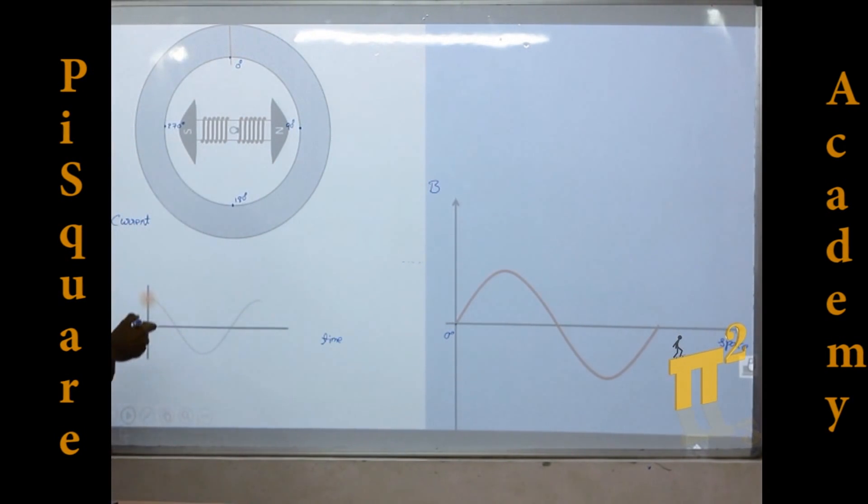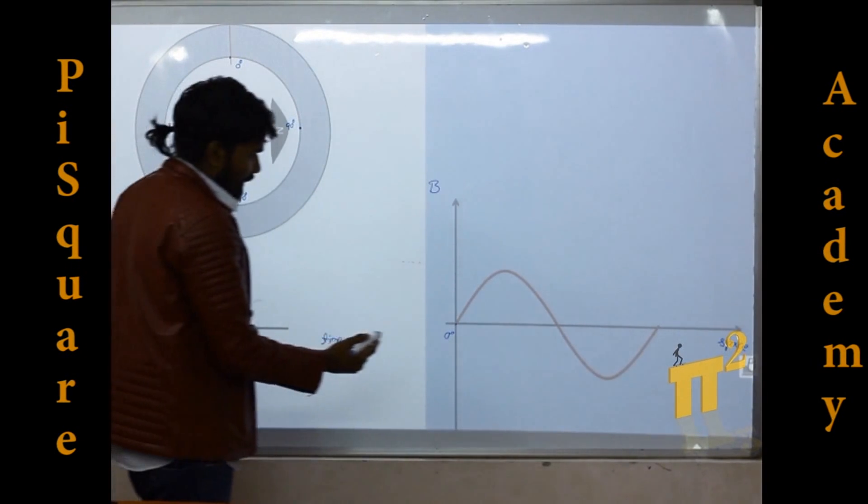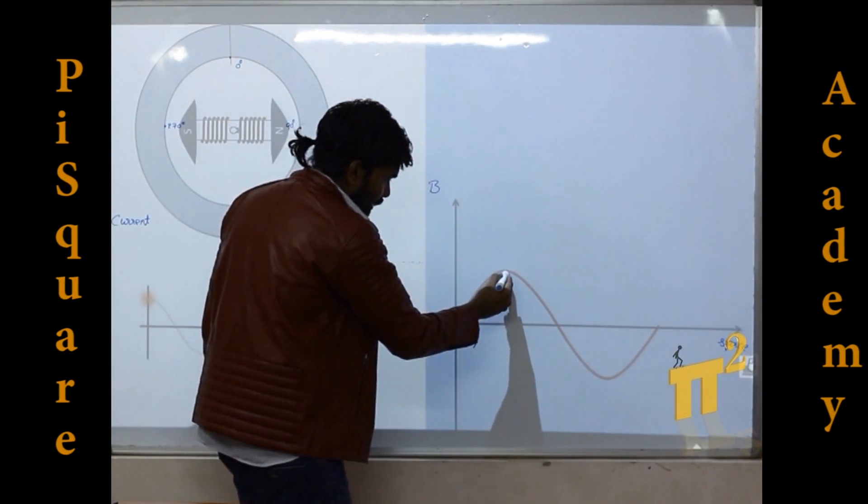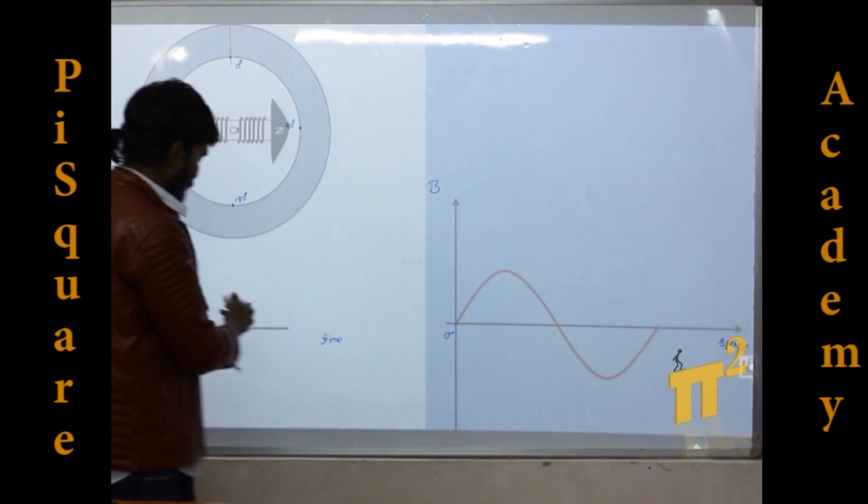Now as the magnitude of current reduces, we have seen before, as the magnitude of current reduces, this maximum value keeps reducing. You can see that here.